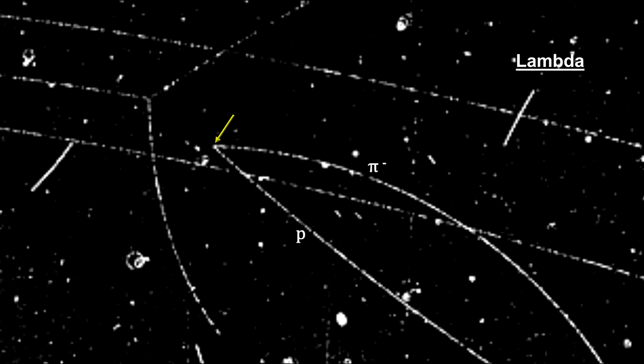It was the proton that told us the decaying neutral particle, lambda, must have had three quarks.